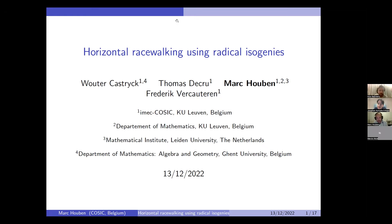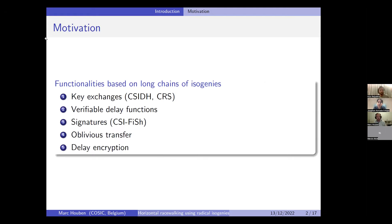I'm going to talk about radical isogenies, which is a certain method that you can use to compute long chains of isogenies of a small degree. You can use this to speed up certain isogeny-based schemes, especially the ones that are based on computing long chains of isogenies. Nowadays we have a lot of functionalities in the isogenies world that use this.